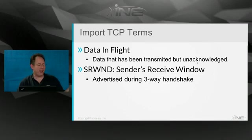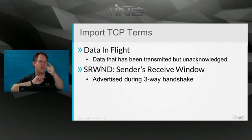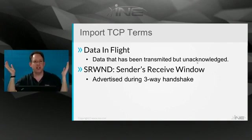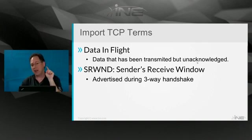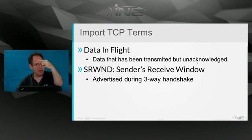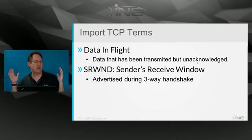The sender's receive window is a bit of a unique concept. During the TCP three-way handshake, if I'm the active initiator and I send you my SYN, from my perspective I'm the sender. Inside that SYN I include the window size, which is my receive window. So I'm telling you: if you ever reply back to me or send something back to me, this is my receive window — I can only handle so much. That is the sender's receive window.